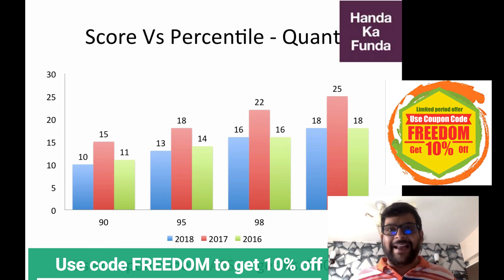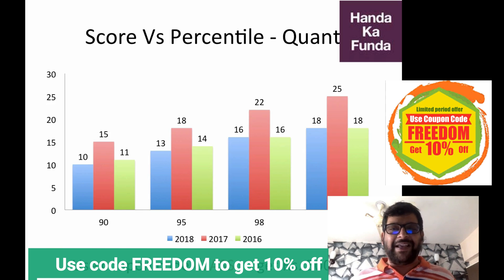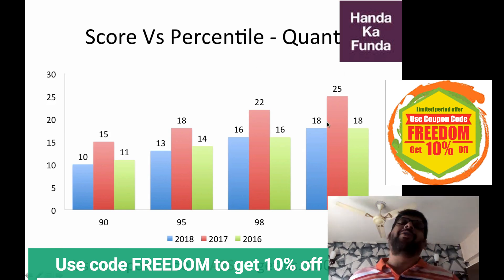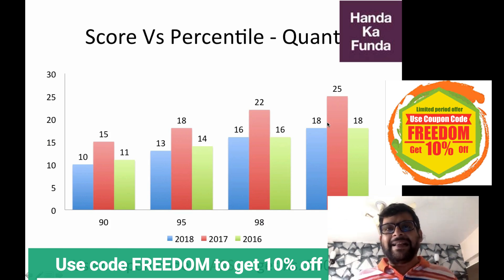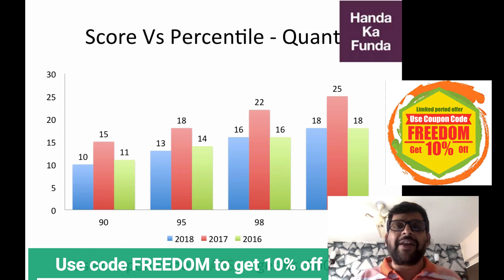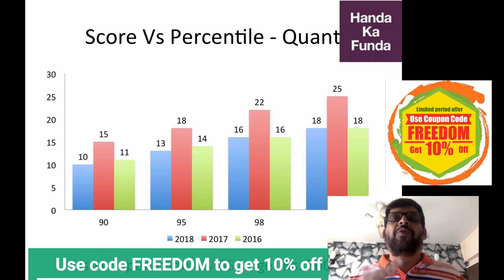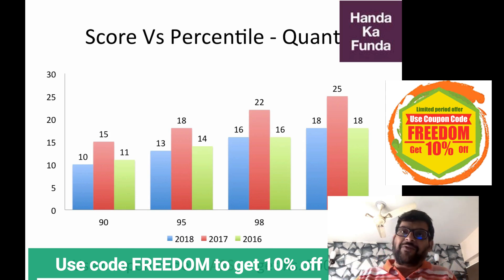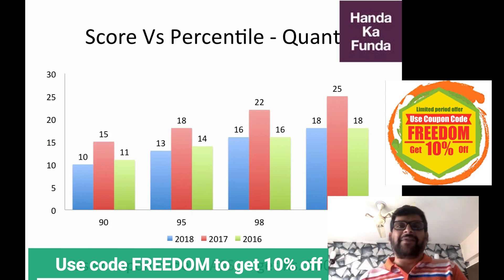Scoring 99 percentile is always going to be difficult — it's never going to be easy. But if a paper is really simple, competition eats up, and this is the thing you need to be prepared for in Quant: you cannot be sure what is a good attempt. You can only get that once you are done with the paper. In LRDI and VARC, it's a lot more systematic.